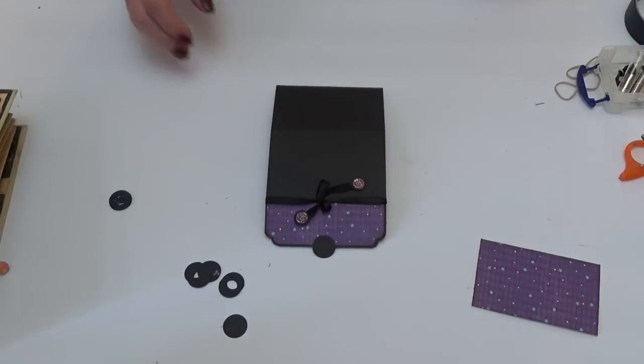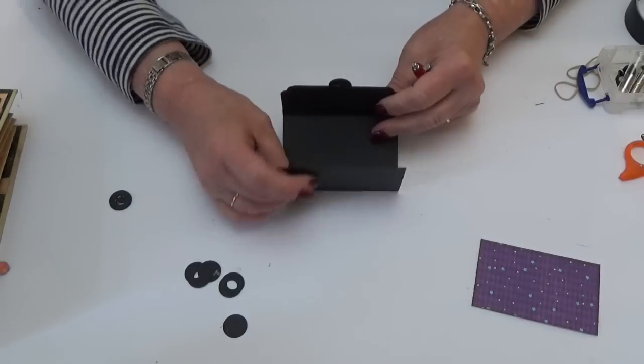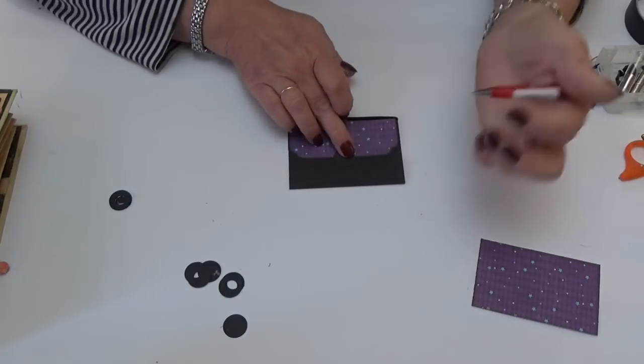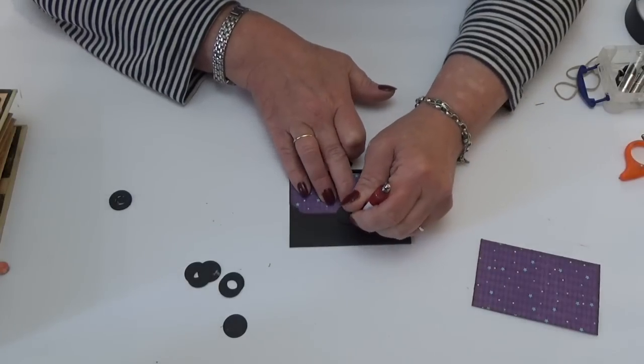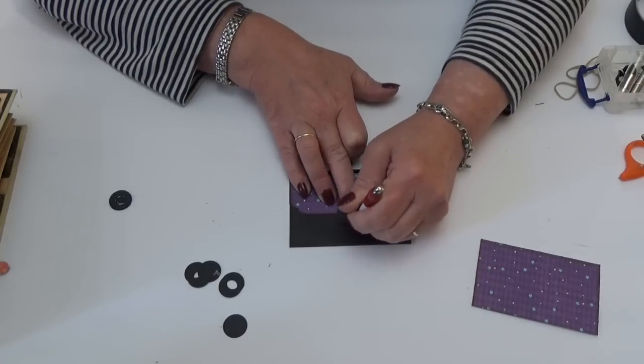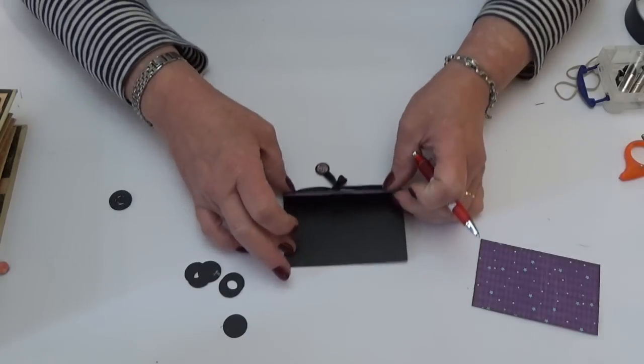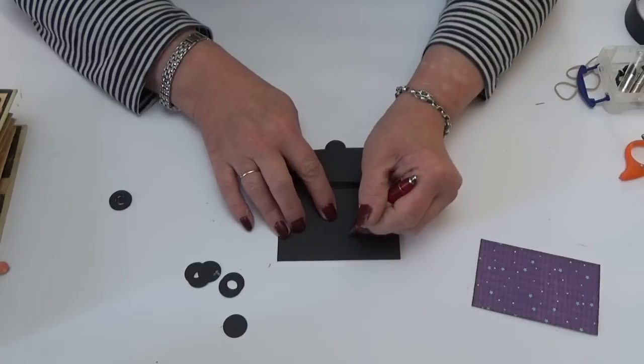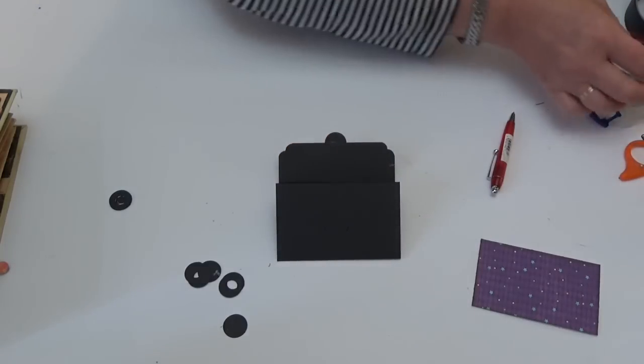And then we need a pencil or a pen. So then you fold up your little pocket, and just on the card—it's going to be covered so it doesn't matter—just draw around that bottom part of your circle. And lift up, and that gives you a nice shape ready to stick one magnet down.